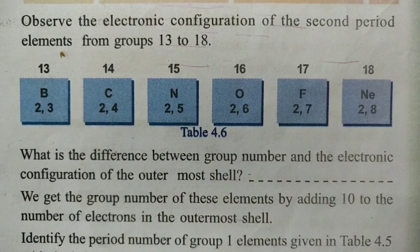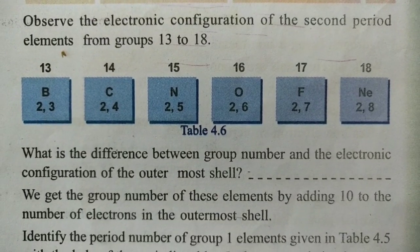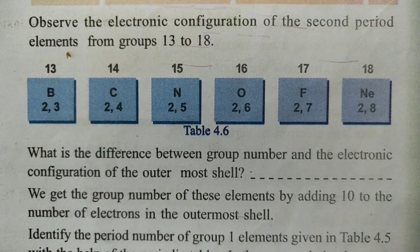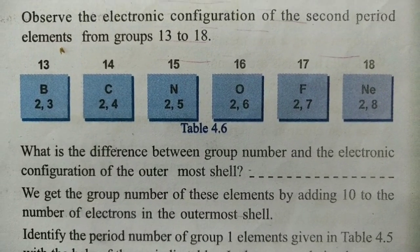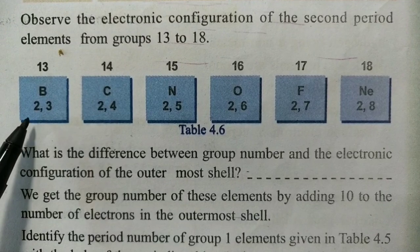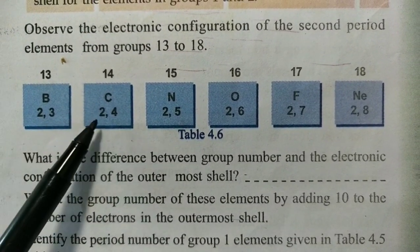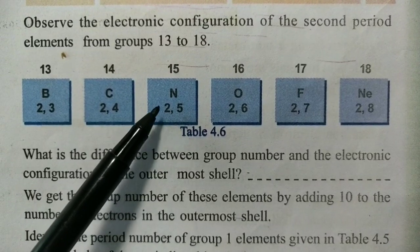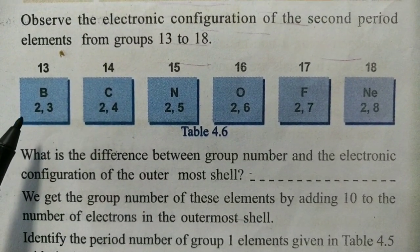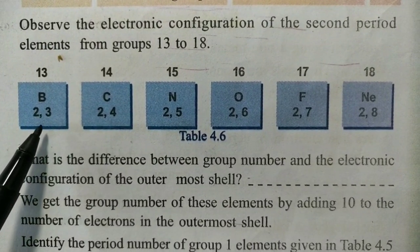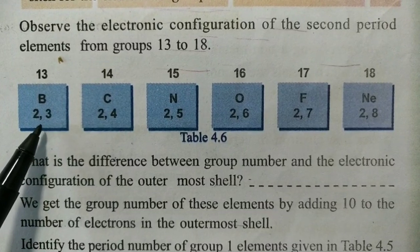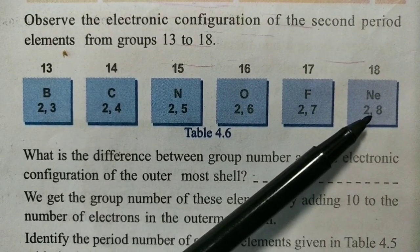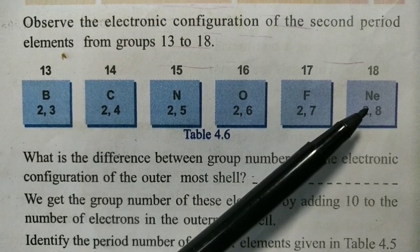Group number is equal to 10 plus the number of electrons in the outermost shell. This relates to the periodic table — the period comes from the number of shells. The 1st shell has 2 electrons, and the 2nd shell has 4 electrons. The 2nd shell gives you period 2, the 3rd shell gives you period 3.